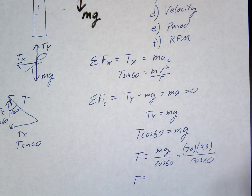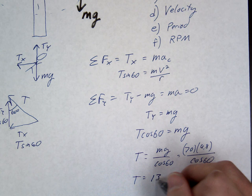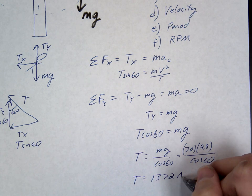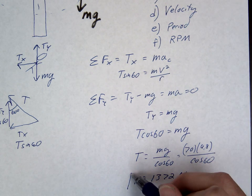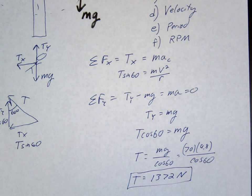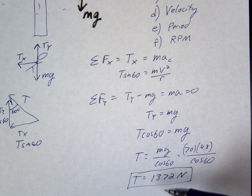It looks like it's about 1,400-ish. Okay, so that's our T here. Okay, how are we going to get to the velocity, letter D?